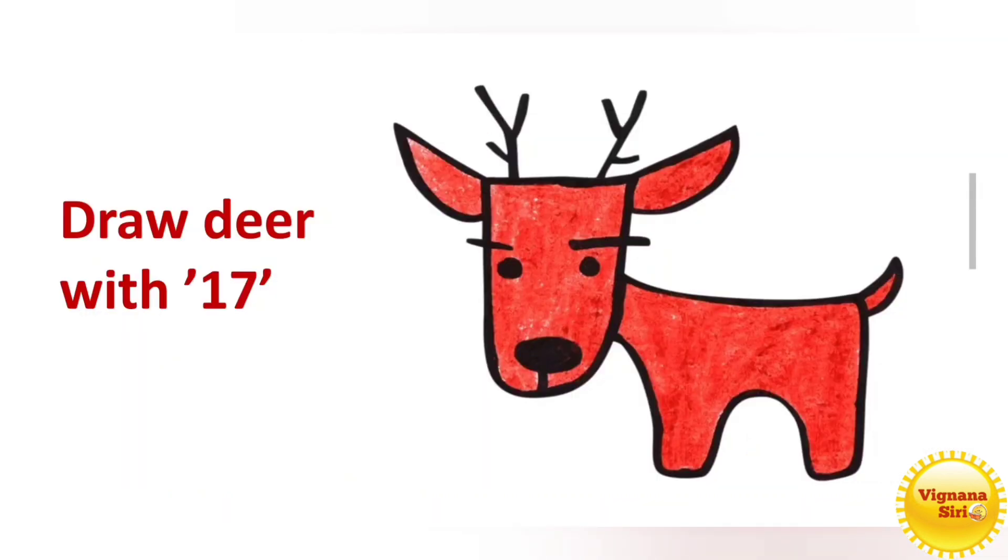Draw deer with number 17. Shall we start? It's very easy. First write the number 17, 1, 7. So join the sleeping line with the standing line and join the downside with a small curve. So it is the face of the deer.